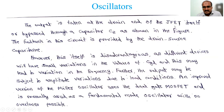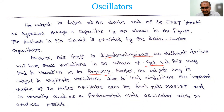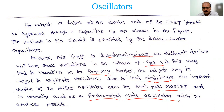A drawback of the Miller oscillator is that different devices have small variations in gate-to-drain capacitance Cgd, which can lead to variation in frequency. The output may also be subject to amplitude variations due to load conditions. An improved version uses the dual-gate MOSFET and is used as a fundamental mode oscillator with no overtones possible. We will not discuss that further here.